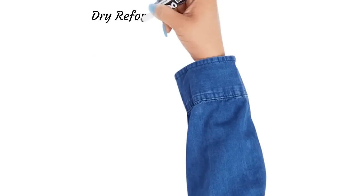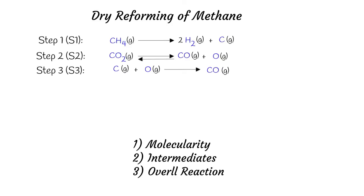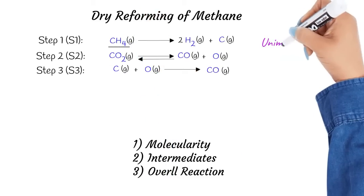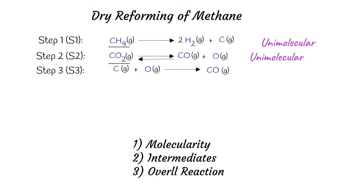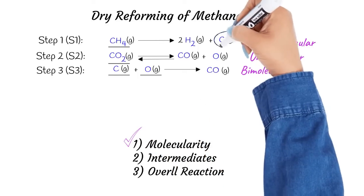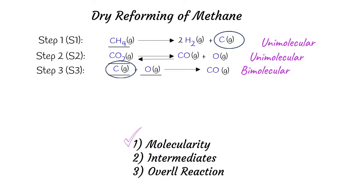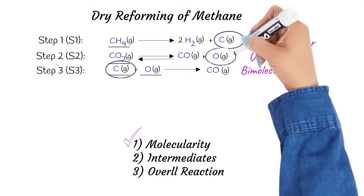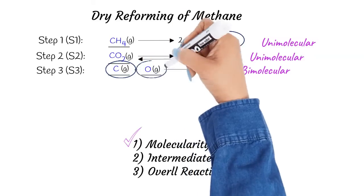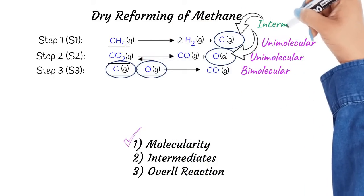Now let's consider a three-step reaction mechanism as shown here. The first two steps have only one reactant each, and thus we can call them unimolecular reactions. However, in step 3, there are two reactants involved, C and O, so we call step 3 a bimolecular reaction. Here, C is produced in step 1 and gets consumed in step 3. Similarly, O is produced in step 2 and gets consumed in step 3. Therefore, both C and O are intermediates of this reaction.